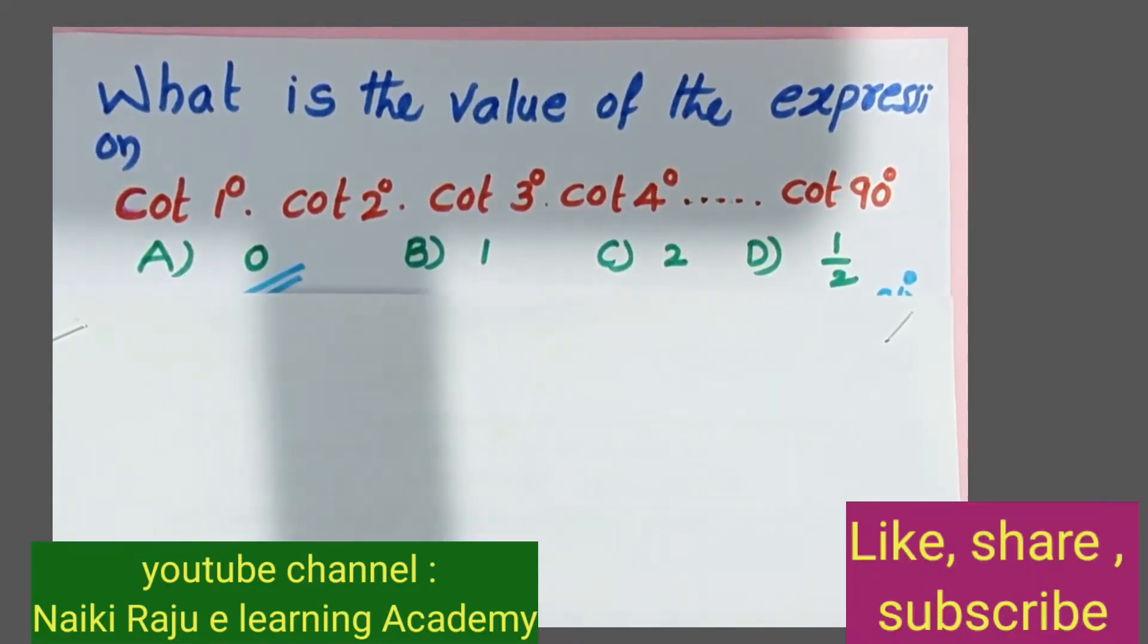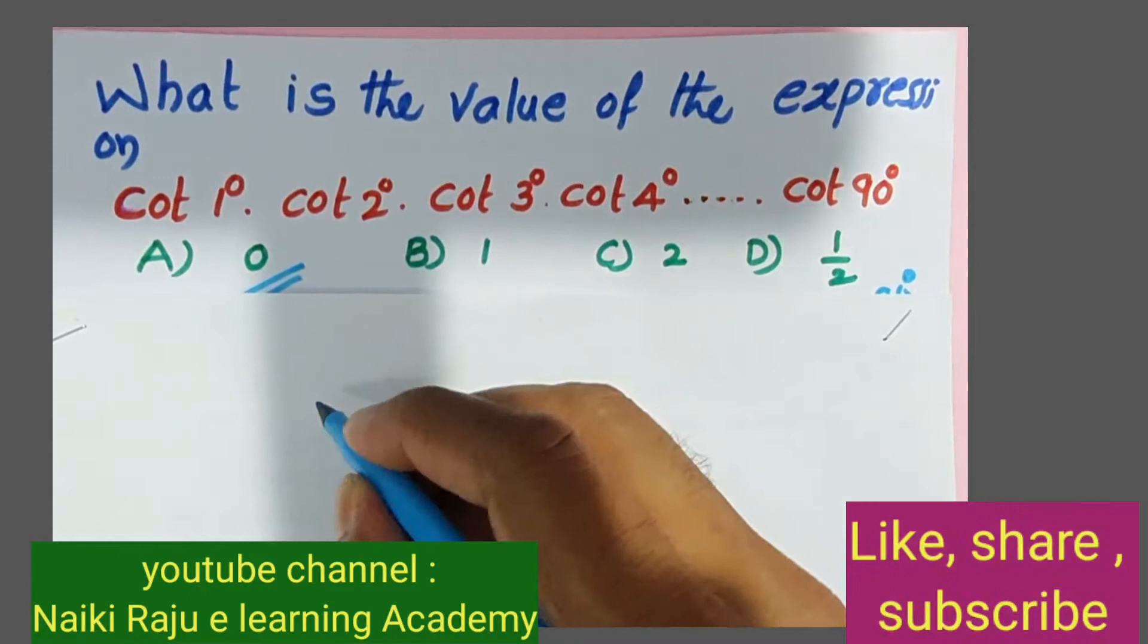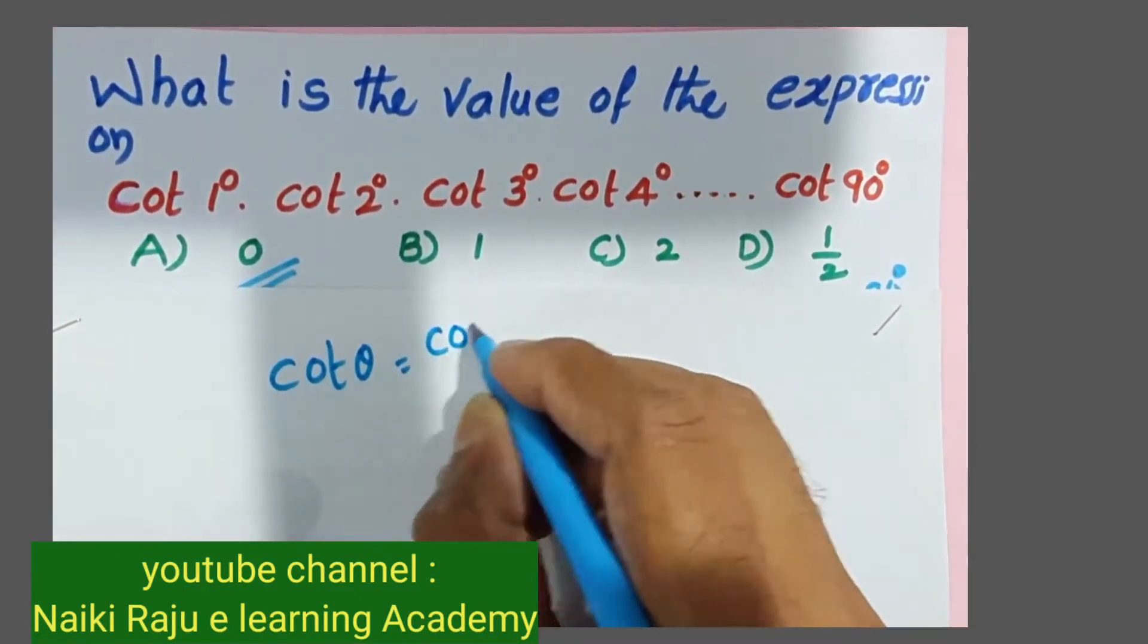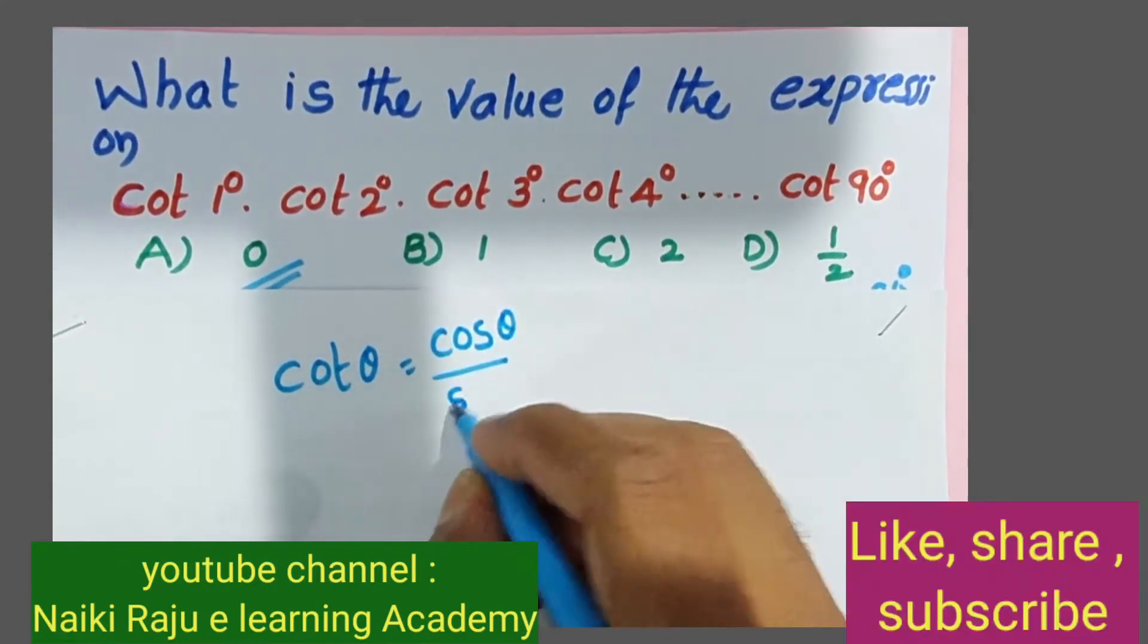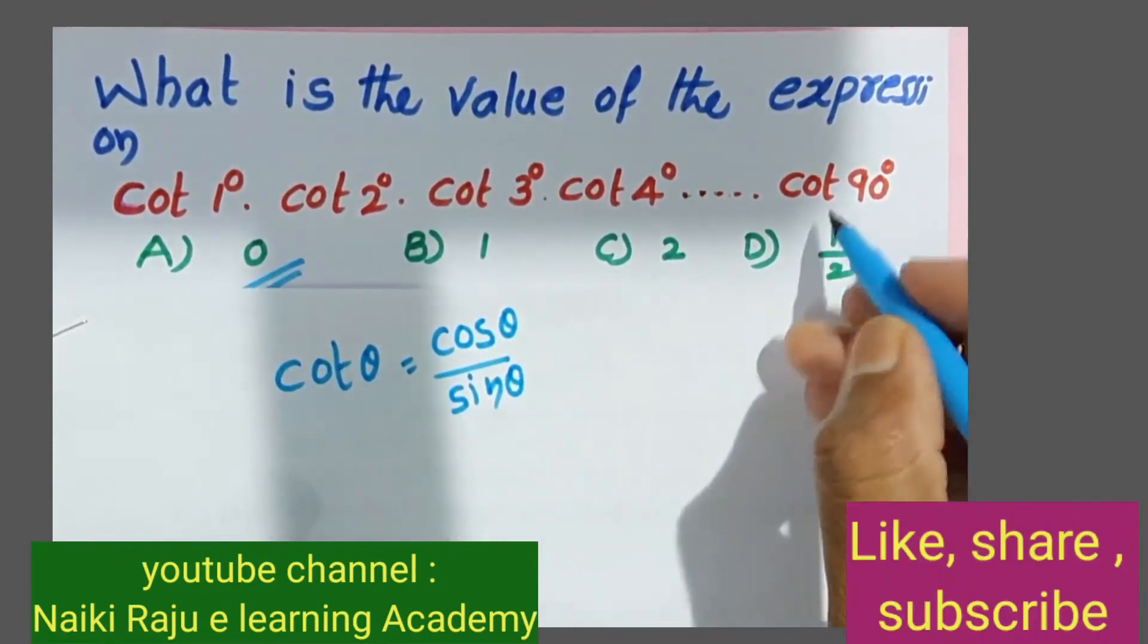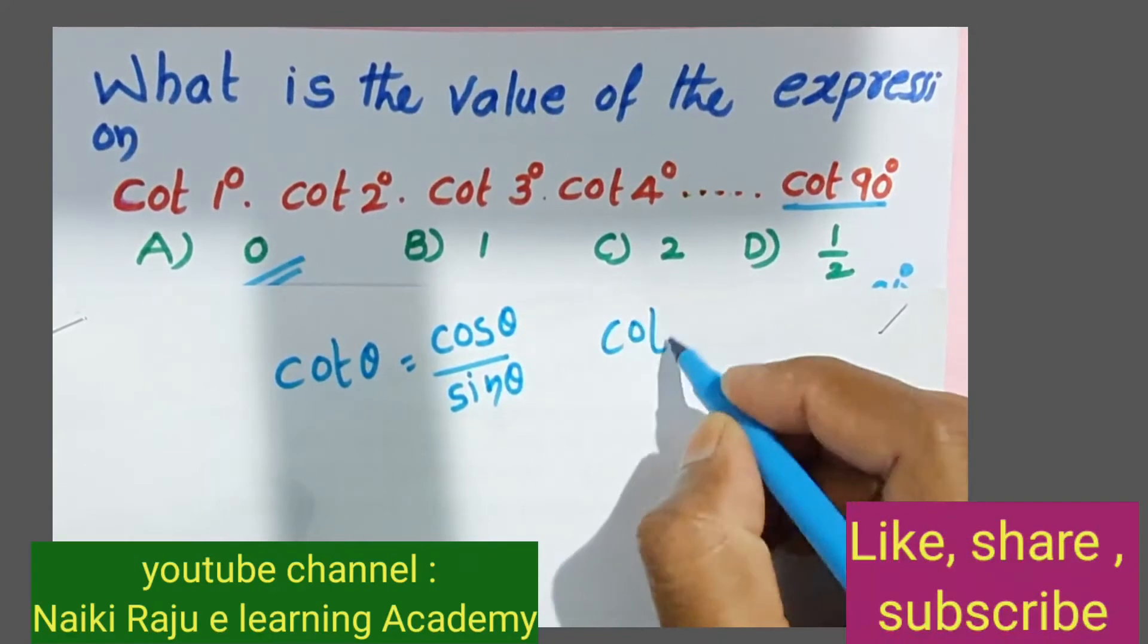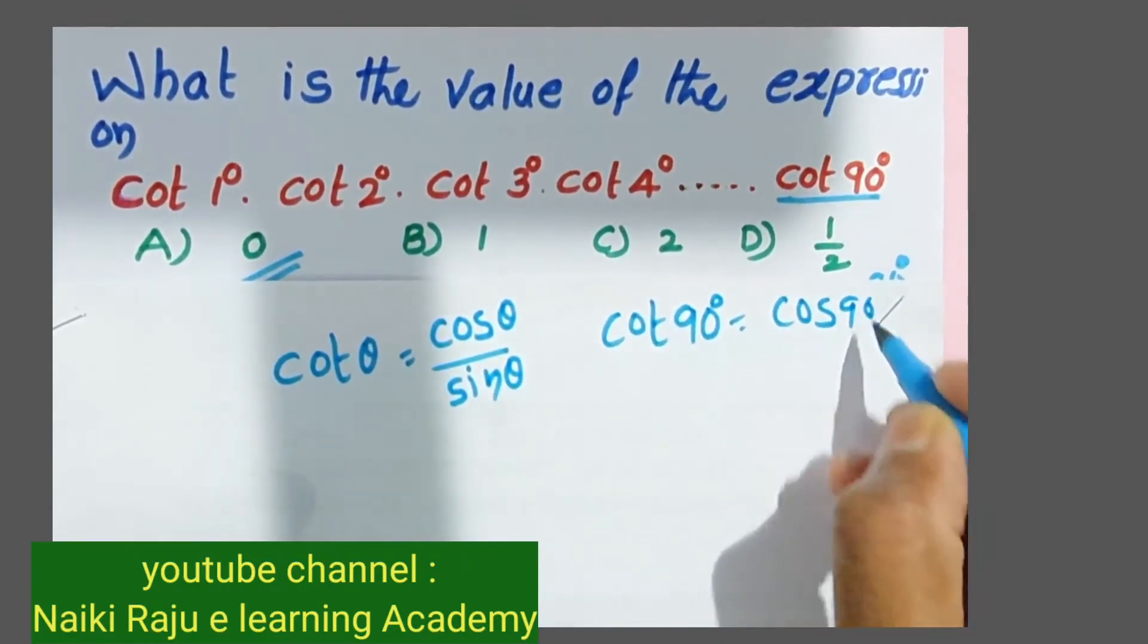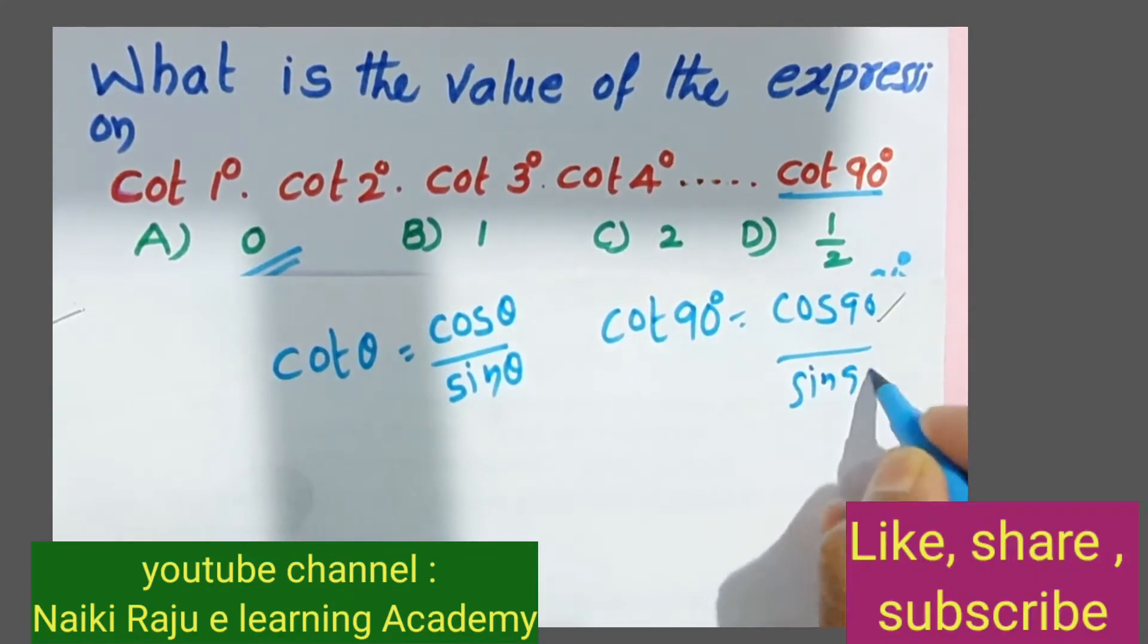We know that cot θ equals cos θ divided by sin θ. So for cot 90°, we have cot 90° equals cos 90° divided by sin 90°.